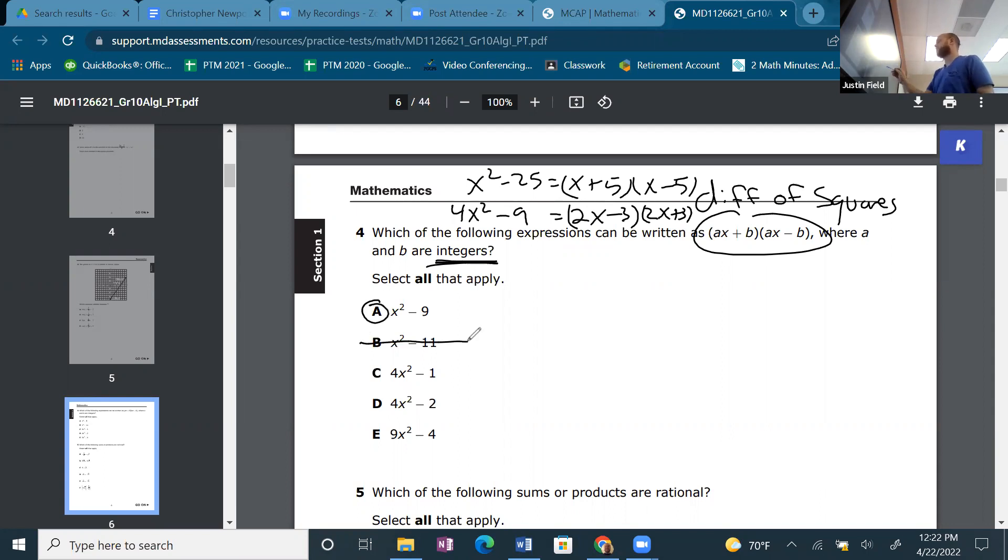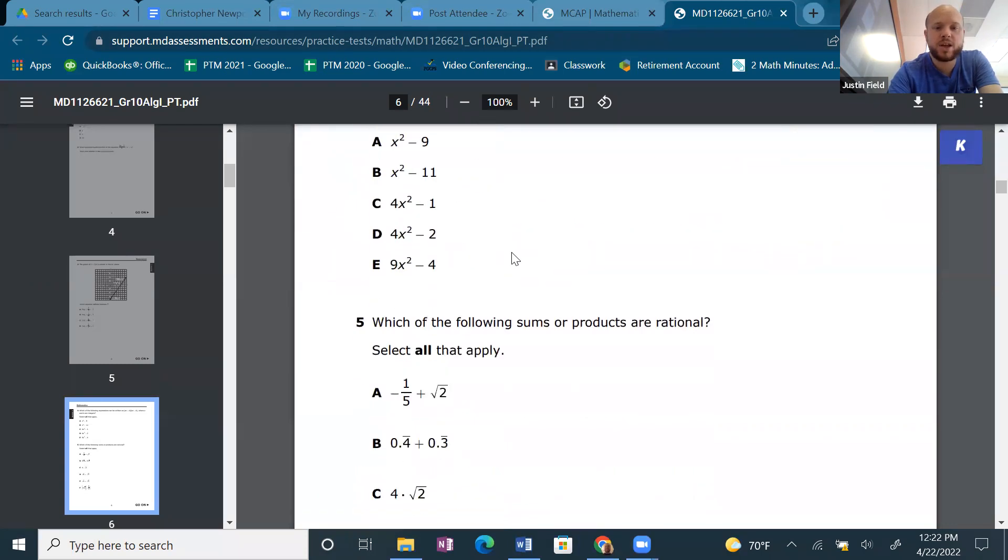11 is not a perfect square. 1 is a perfect square. 4 is no. Yes. So just choose the ones only with the perfect square, so we get integers, coefficients, and terms.